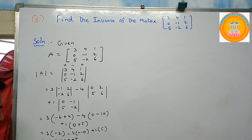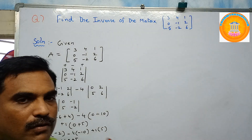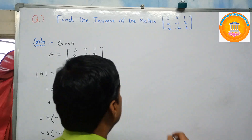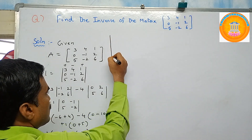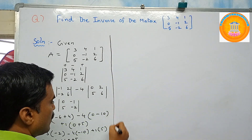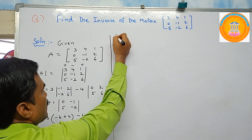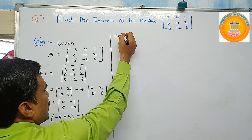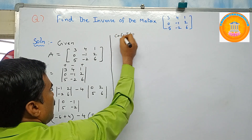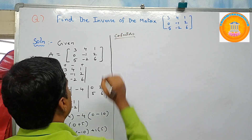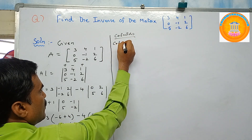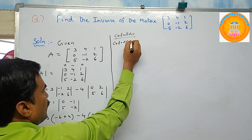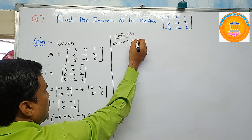The determinant of A is thirty-nine, which is a non-zero value — not equal to zero. Therefore the inverse of this matrix exists. The next thing you need to find is the cofactors of all nine elements.